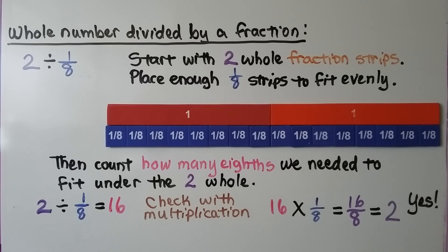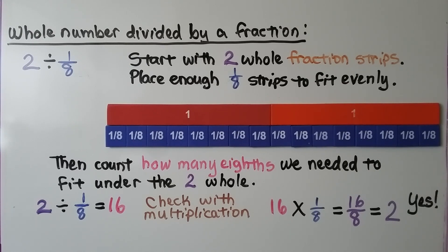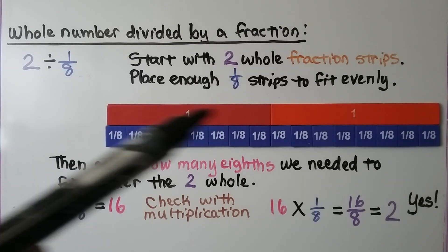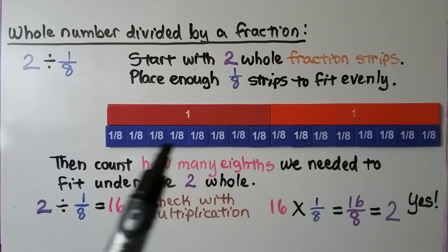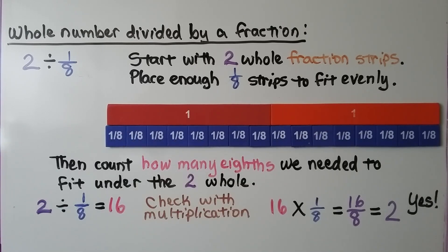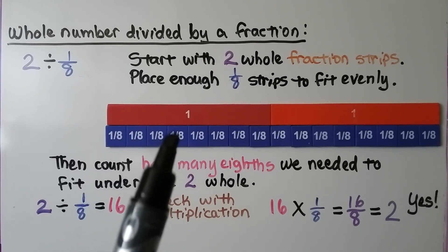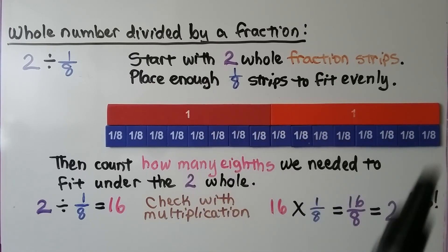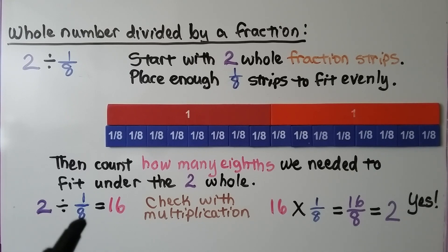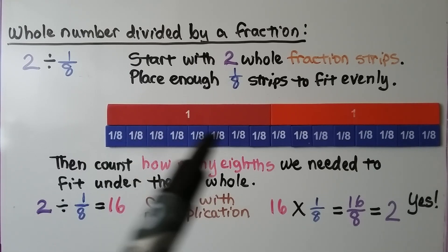When we have a whole number divided by a fraction, such as two divided by one-eighth, we can model it with fraction strips. We start with two whole fraction strips and place enough one-eighth strips to fit evenly underneath them. We count how many eighths we needed — there are sixteen. So two divided by one-eighth is equal to sixteen.